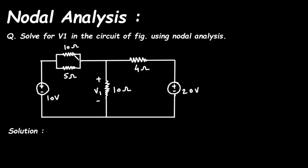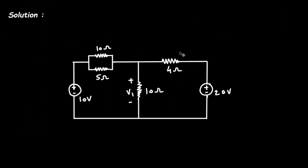In this video we will see an example on nodal analysis. The question is: solve for V1 in the circuit using nodal analysis. We have to find the value of voltage V1, which is the voltage across the 10 ohm resistor.